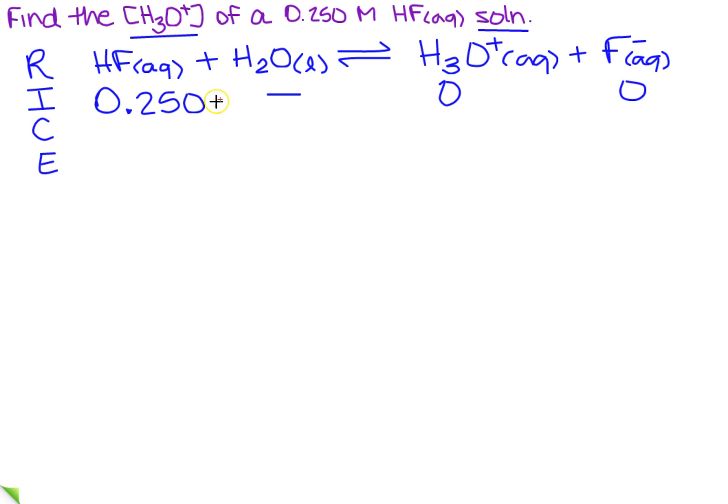So my change is, well, I'm going to have to take it away from what I started with. So over here, then it's the opposite, so I'm going to add X to both of these. And then I'm going to draw my line. And so at equilibrium, I'm going to add straight down. So I've got 0.250 minus X. Then I've got X and X.